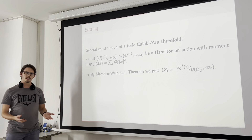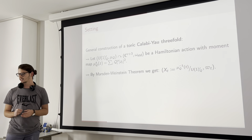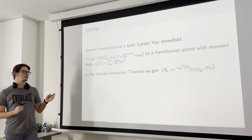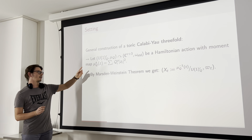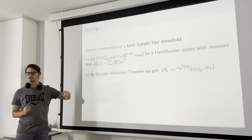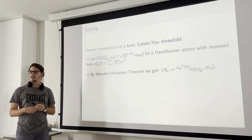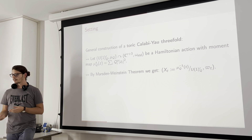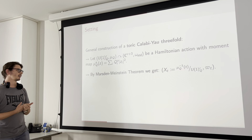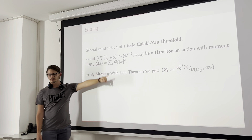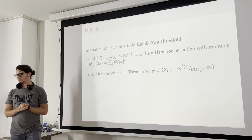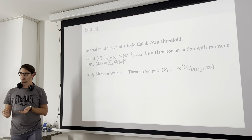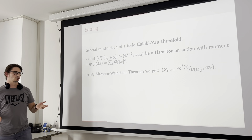We start by specializing to the case of a toric Calabi-Yau 3-fold. The general construction of this kind of manifold can be obtained by looking at C^(r+3) with the standard symplectic structure, with a U(1)^r acting on it. We require this action to be Hamiltonian, and in general this condition is given by a choice of the so-called charge matrix Q, which gives us an embedding of U(1)^r inside the canonical U(1)^(r+3) acting on C^(r+3).